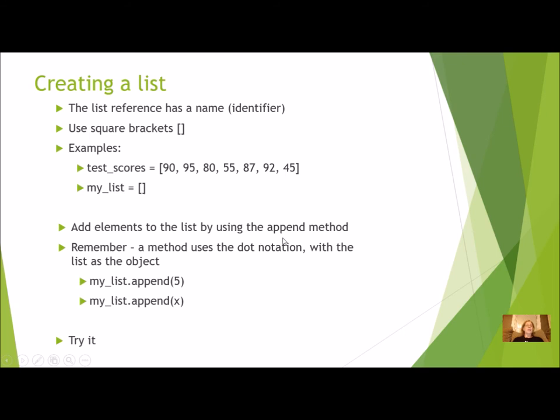I'm going to add elements to the list by using the append method. Now this is a method. Remember what that means. A method uses dot notation. We did this with our Finch robot where our Finch was the object. So we had Finch dot and then whatever the method was. Here's some examples. My list is going to be the list object. So my_list.append is the method. And then in parentheses I pass in some argument. I could append a literal value like five, or I could append a value of a variable.